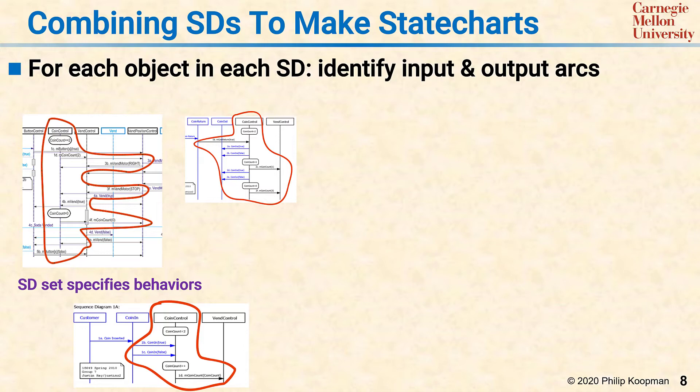Remember, a sequence diagram omits an object if the object doesn't matter, so generally speaking, only some sequence diagrams will involve any particular object. On the sequence diagrams that include the object, find the object and all its input and output arcs.